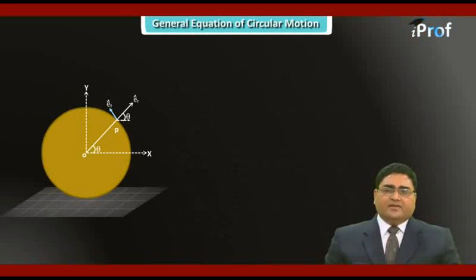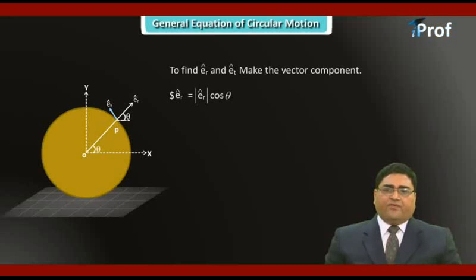If we are interested in calculating ER cap and ET cap, just make the vector components. We find ER cap equals magnitude of ER cap cos theta I cap plus magnitude ER cap sin theta J cap. So ER cap vector will be equal to cos theta I cap plus sin theta J cap.